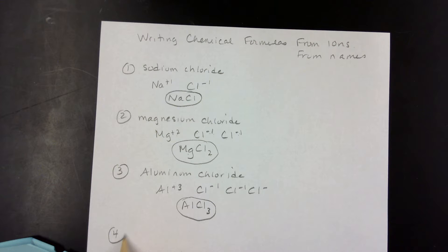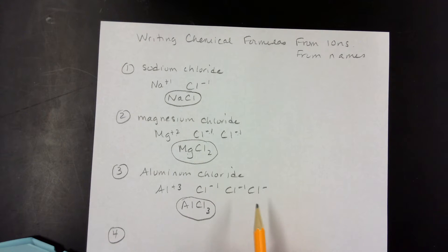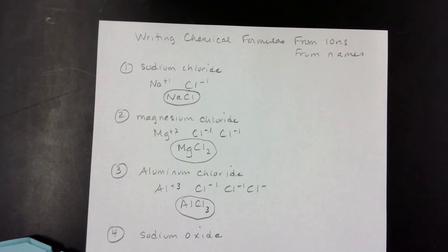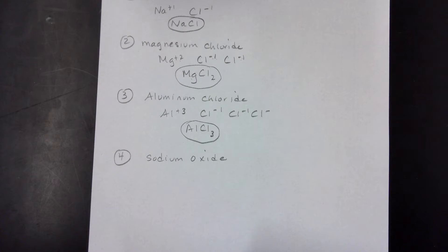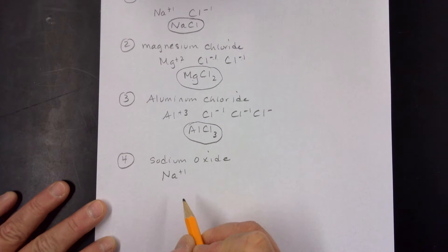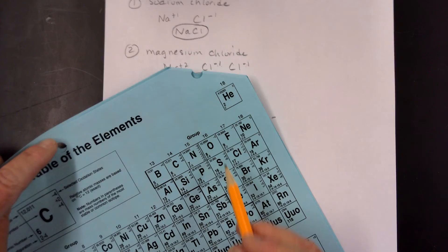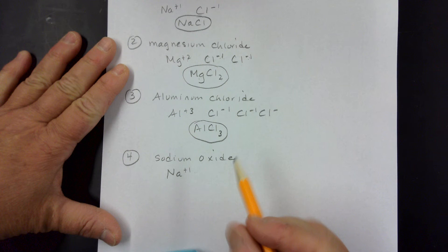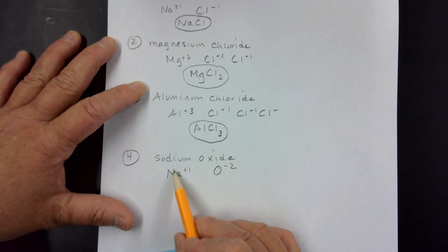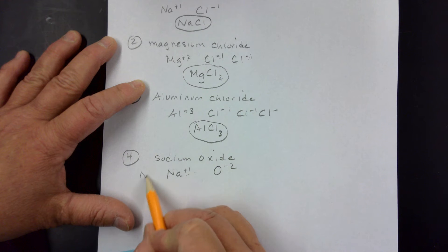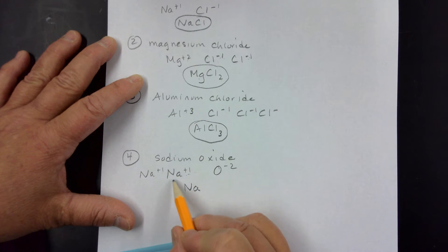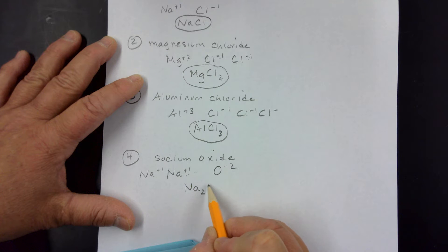It works the same way when the anion has a charge other than minus one. Let's look at sodium oxide. Sodium is a plus one charge: Na⁺¹. Oxide is oxygen: O⁻². We need more than one sodium since our total negative charge is minus two. We need two sodiums, each at plus one. So we put a subscript of two on sodium: Na₂O, showing two sodiums matched with one oxygen.